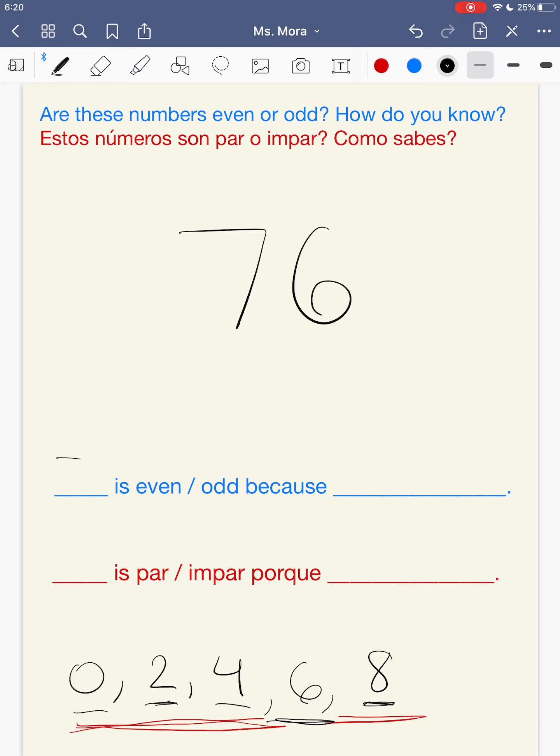So I'm going to write my number down here. 76 is. And hopefully you looked at the 1's place. 6 is an even number. So 76 is even because there are 6 in the 1's place. 76 is par. Porque hay 6 unidades. Aquí están mis 6. Siempre estos números van a ser pares.